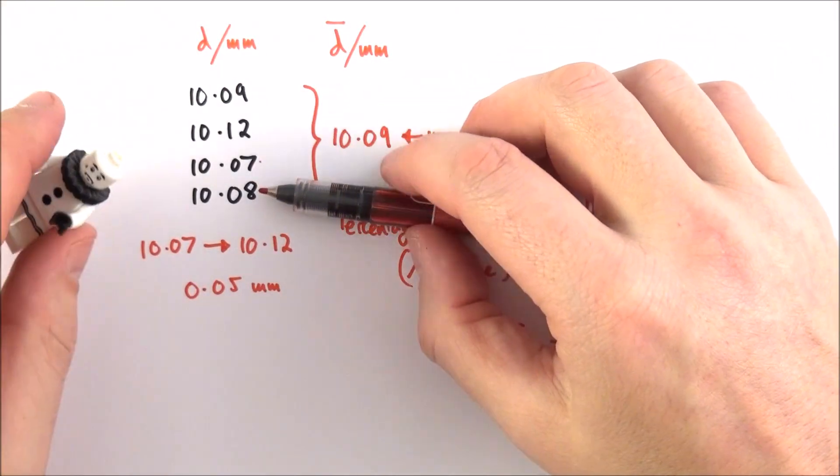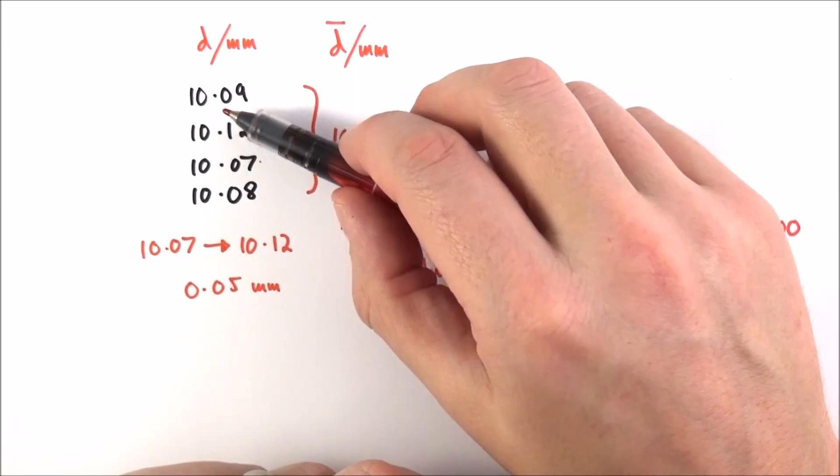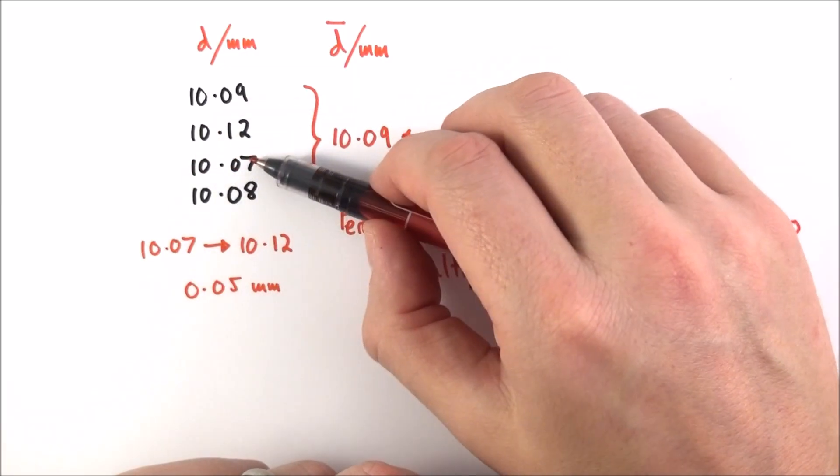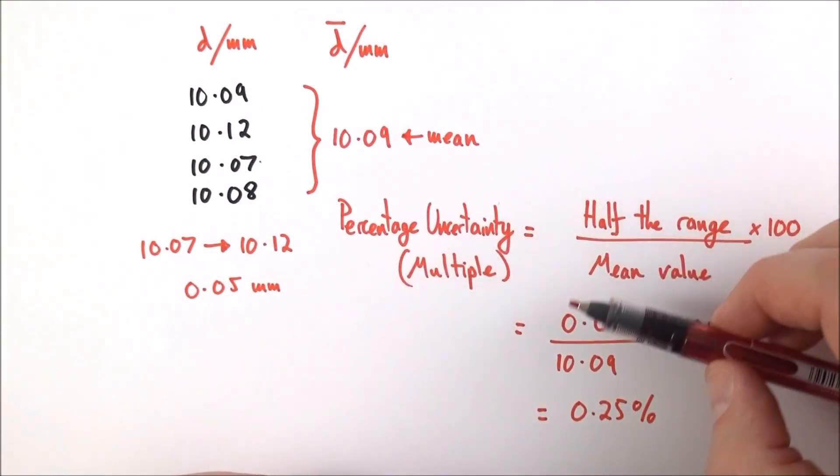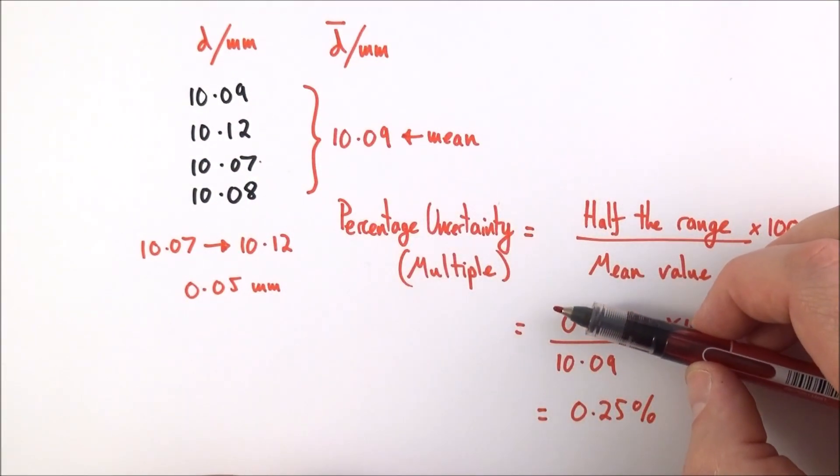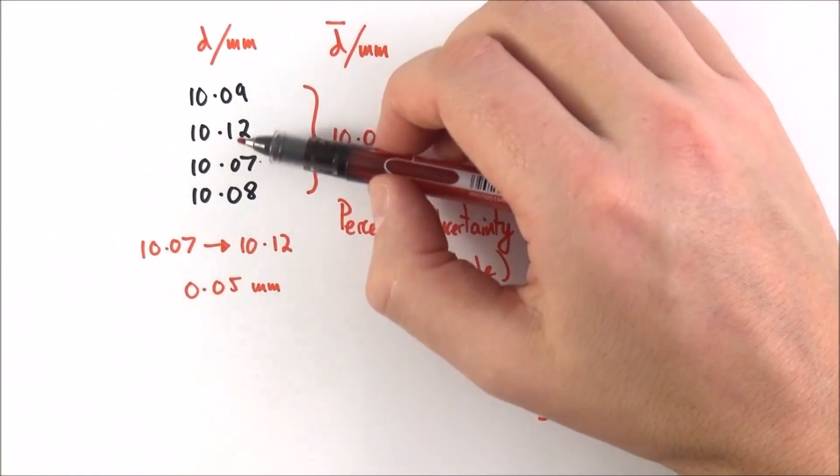So what does that mean? Well basically, if you have a smaller range of values, so perhaps all the values were 10.09 or 10.07 or 10.08, the smaller the range of values, the greater the, or the smaller the percentage uncertainty.